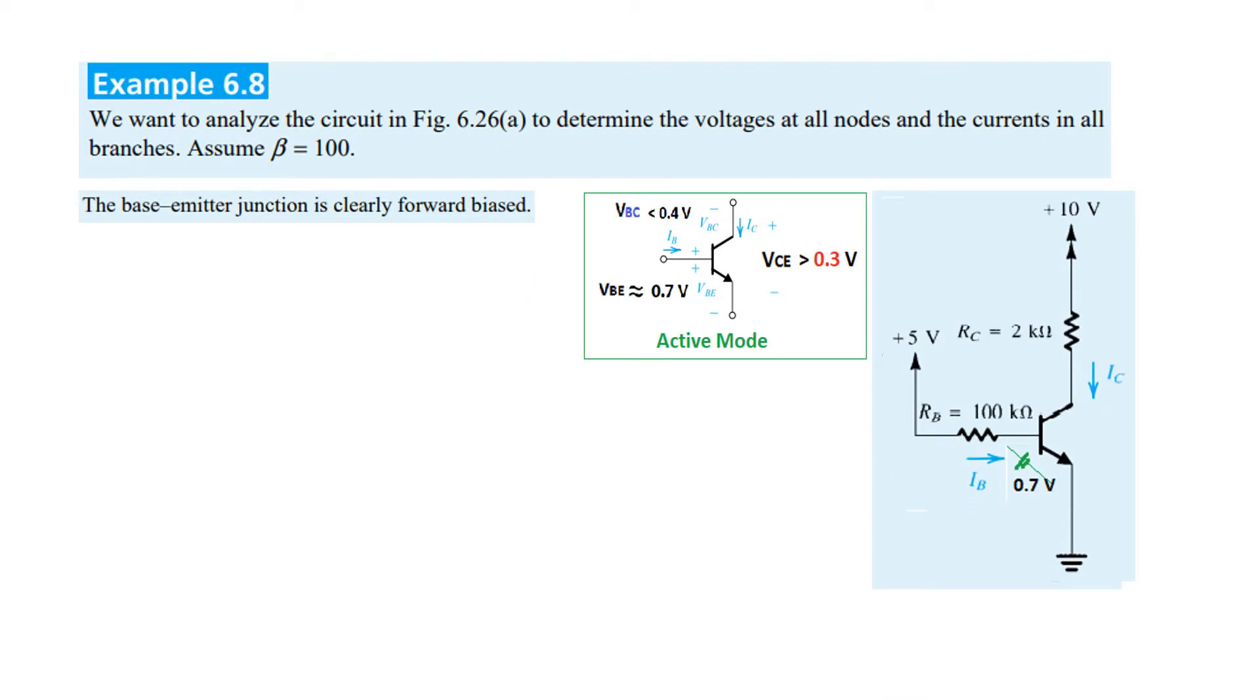Now if you look at the circuit, the emitter-base junction is clearly forward biased. We take the base-emitter junction to be 0.7V. This is positive and this is ground, therefore the base-emitter junction is forward biased.